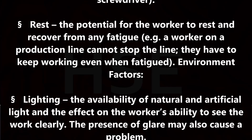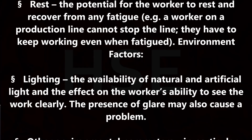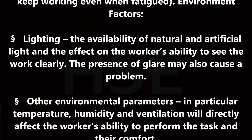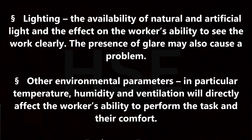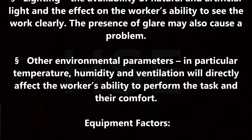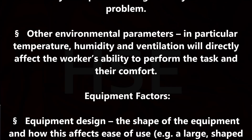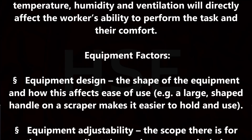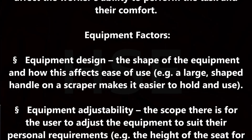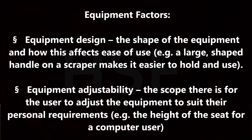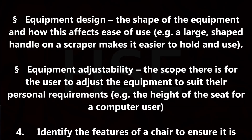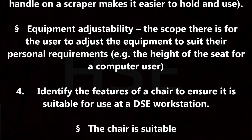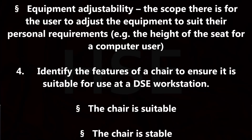Environment factors — Lighting: the availability of natural and artificial light and the effect on the worker's ability to see the work clearly; the presence of glare may also cause a problem. Other environmental parameters, in particular temperature, humidity and ventilation, will directly affect the worker's ability to perform the task and their comfort. Equipment factors — Equipment design: the shape of the equipment and how this affects ease of use, for example a large shaped handle on a scraper makes it easier to hold and use. Equipment adjustability: the scope for the user to adjust the equipment to suit their personal requirements, for example the height of the seat for a computer user.